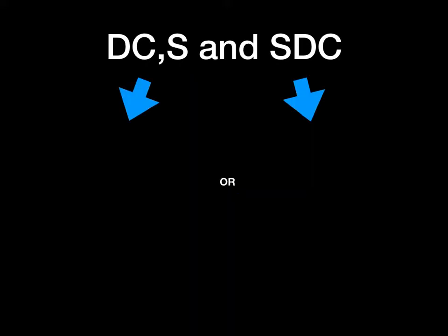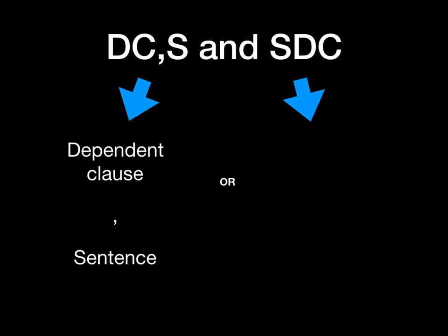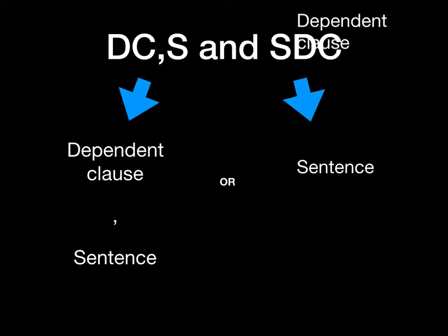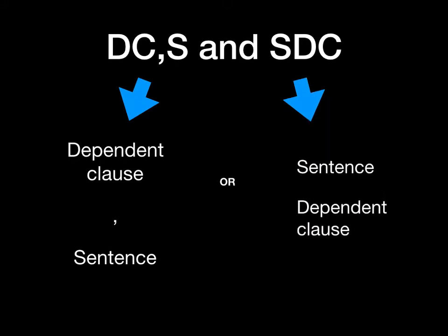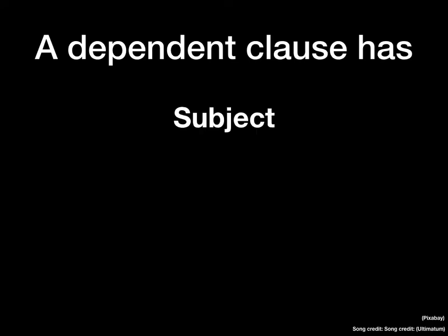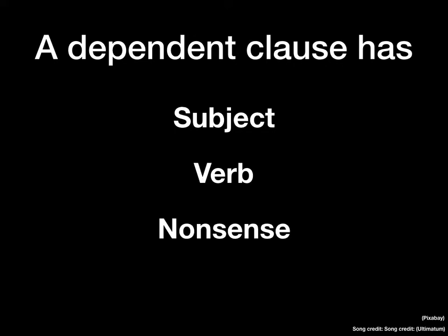We also know DC comma S and S DC — you're flipping sentence patterns. If you're starting with a DC, you start with a dependent clause, add a comma, and a sentence, because it introduces your sentence. Or if you have S DC, you simply put your sentence and your dependent clause. What's a dependent clause? I'm glad you asked. It's got three things: a subject, a verb, and a nonsense word — that's the reason it's dependent.